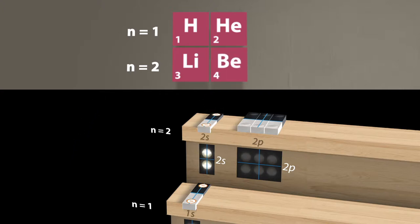The fourth electron occupies the other spin state in the 2s orbital. This corresponds to the element beryllium.